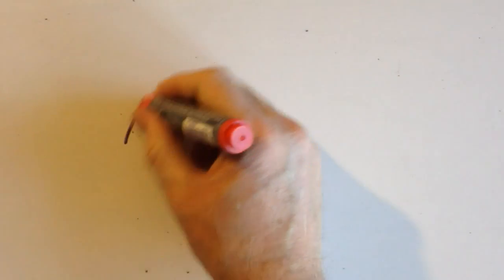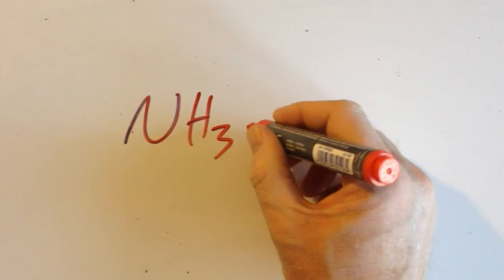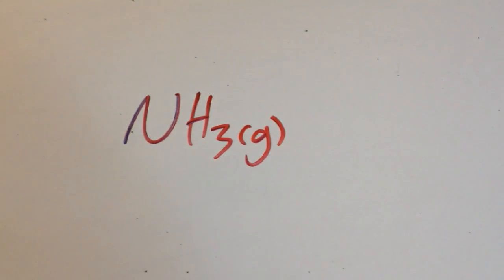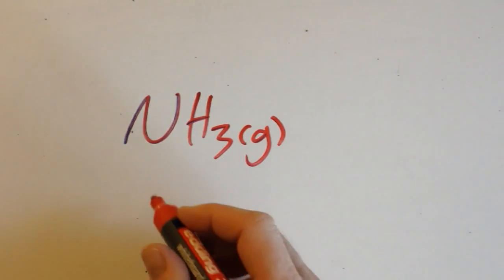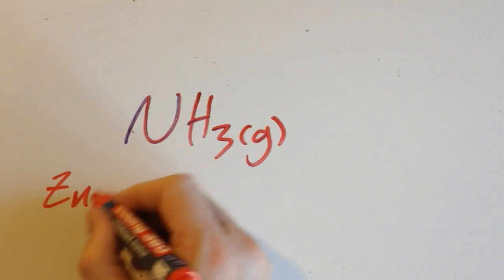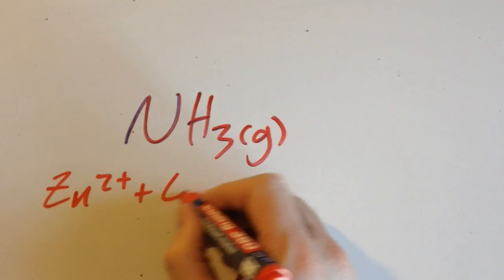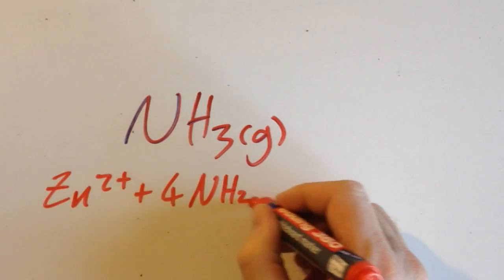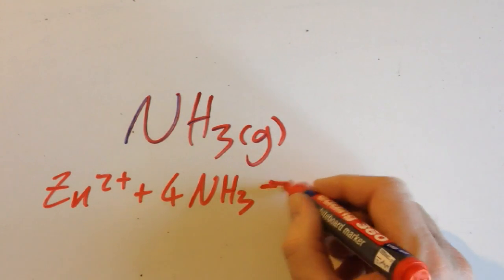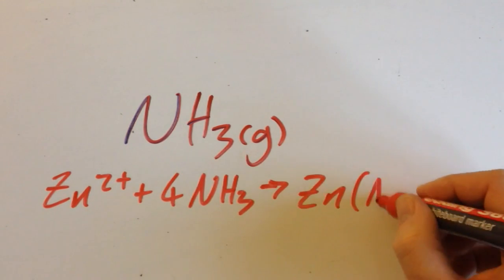The previous reaction made NH₃, which is a gas, so why don't these batteries explode if they're producing gas? Well, the reason is that the Zn²⁺ ions react with four of those ammonia and they make this chemical here.